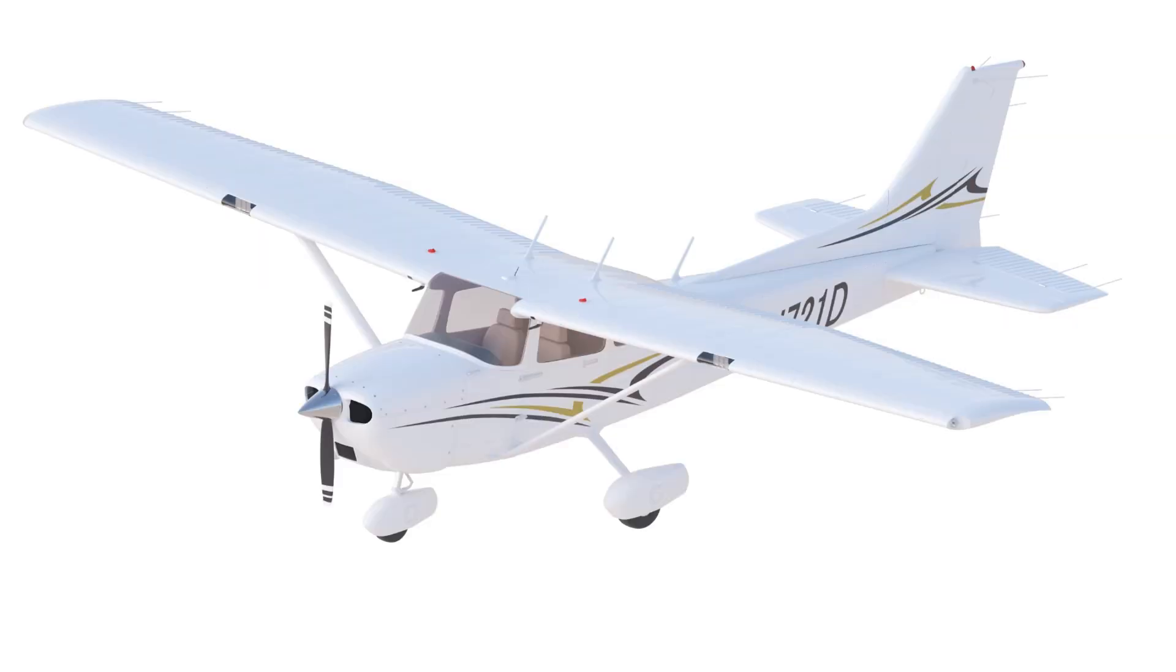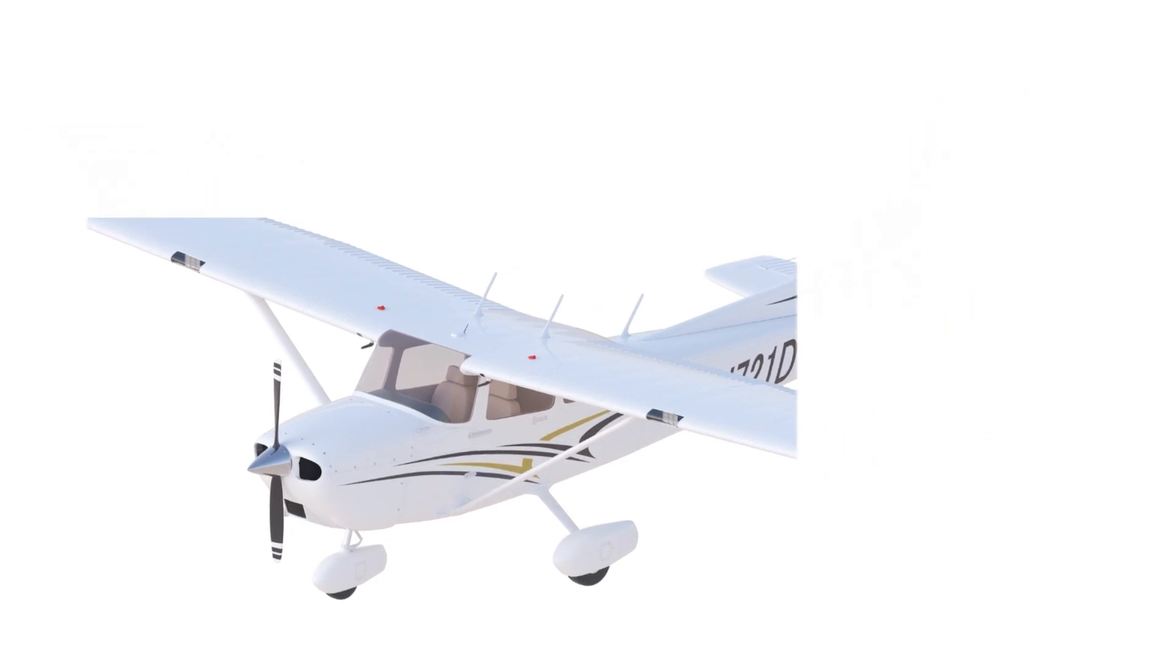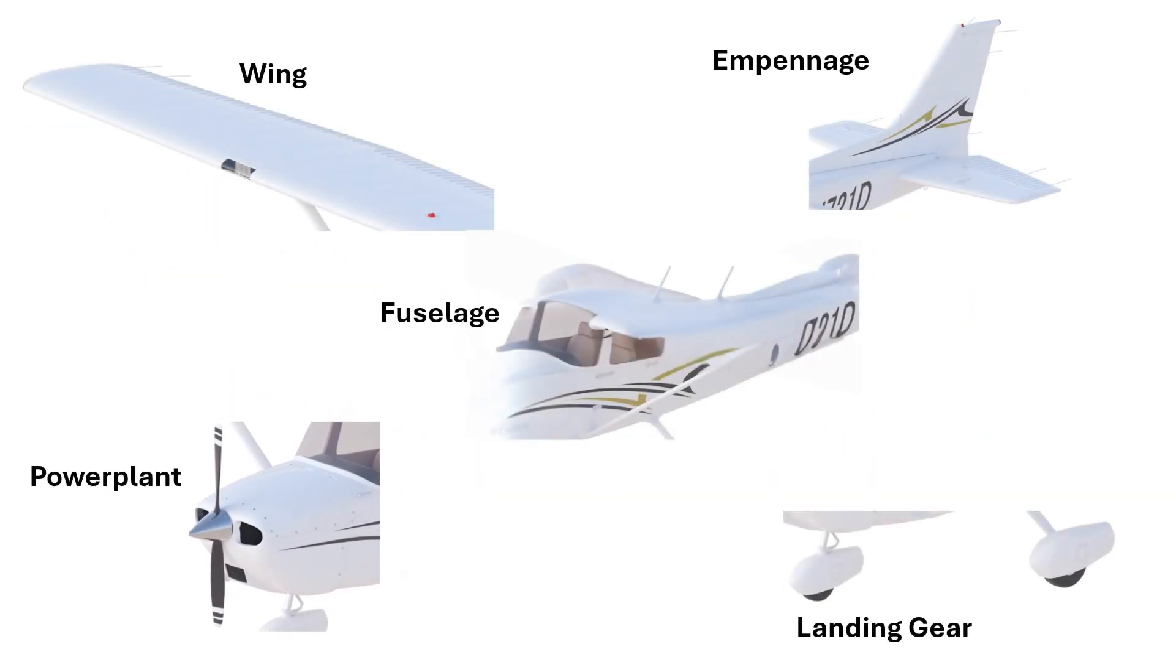An airplane is comprised of five main components: the wings, fuselage, power plant, landing gear, and empennage.